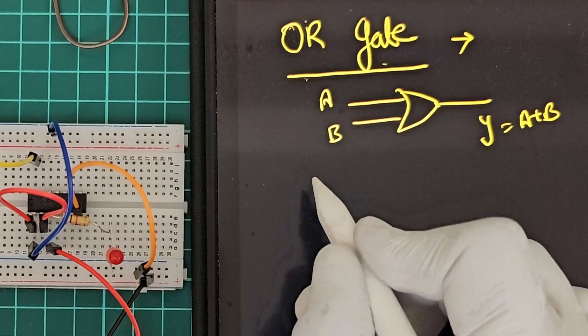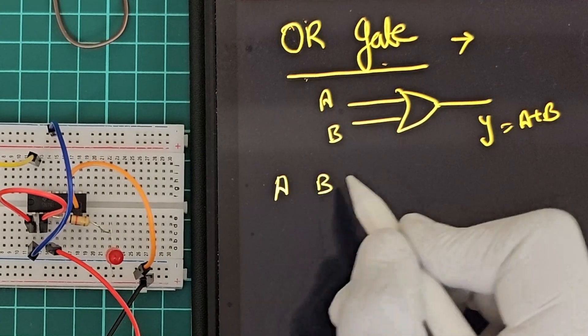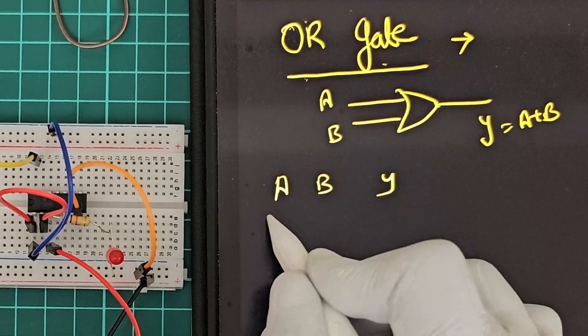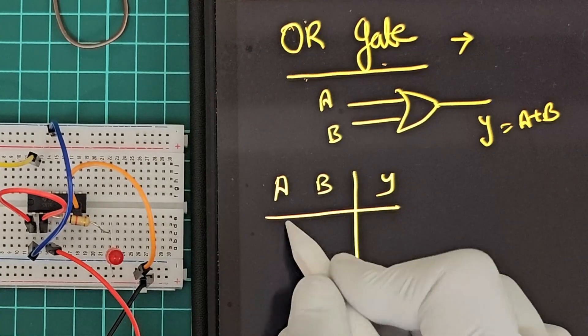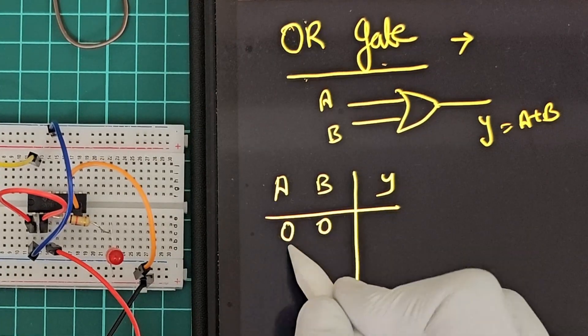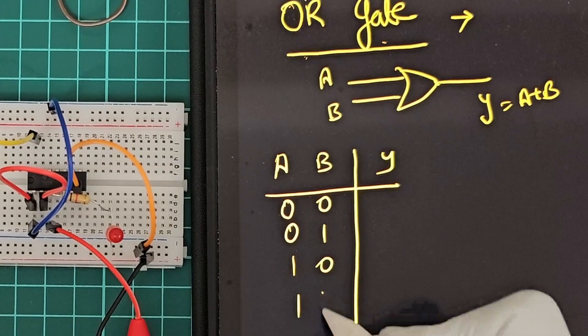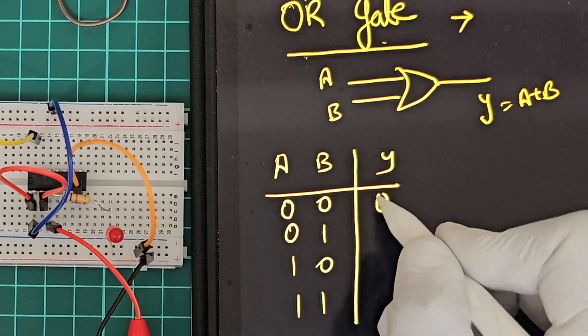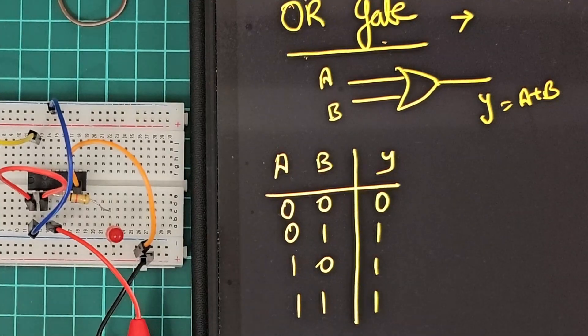The truth table has columns A, B, and Y. The rows are: 0, 0, 0; then 0, 1, 1; then 1, 0, 1; and 1, 1, 1.